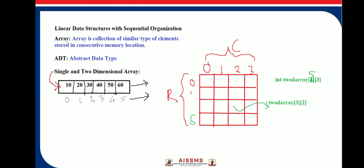The advantages of sequential organization are that elements can be retrieved or stored very efficiently with the help of index and memory location. All elements are stored at continuous memory locations, hence searching of elements from sequential organization is easy.